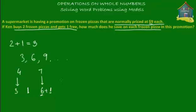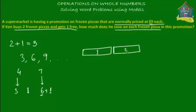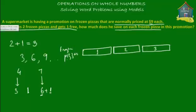For our purposes, Ken bought two frozen pizzas, so we're going to draw the model diagram with two frozen pizzas. We have pizza number one and pizza number two. Ken bought two frozen pizzas and got one for free, so we draw a third pizza which he got for free. Let's label these as frozen pizzas and color them — pizza one, pizza two, and pizza three.